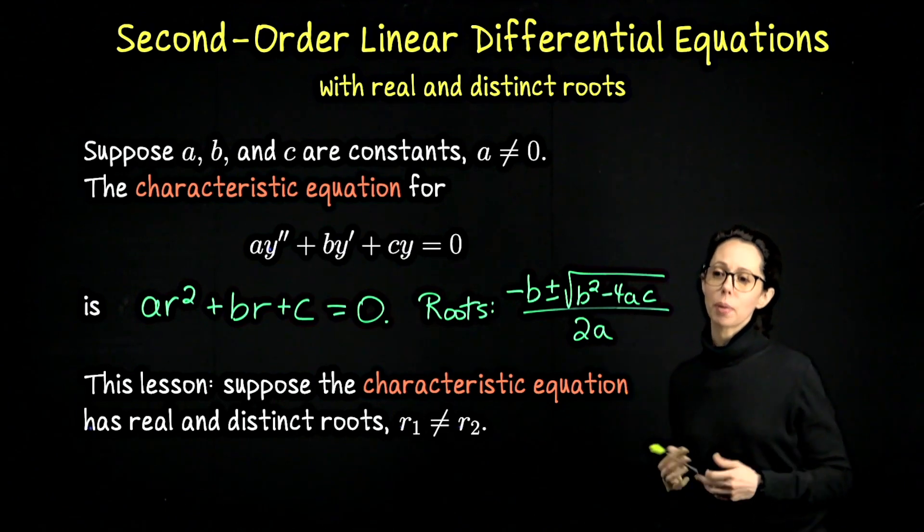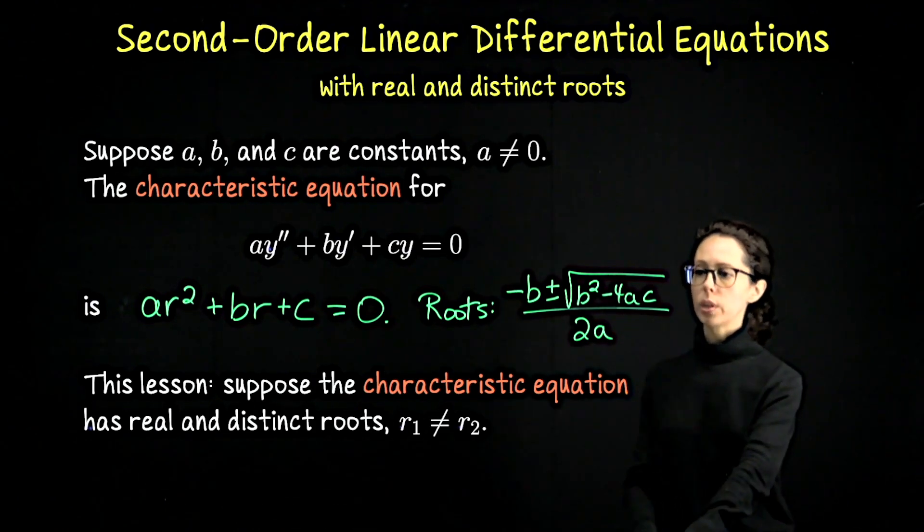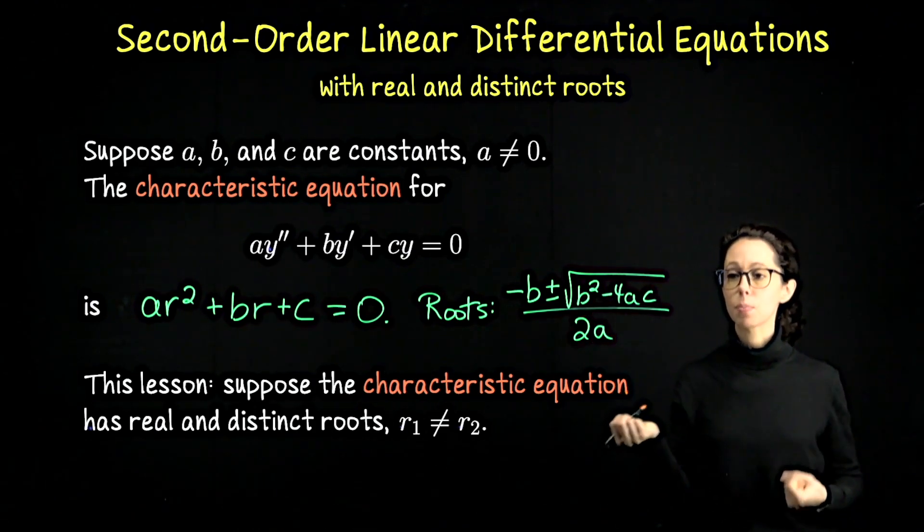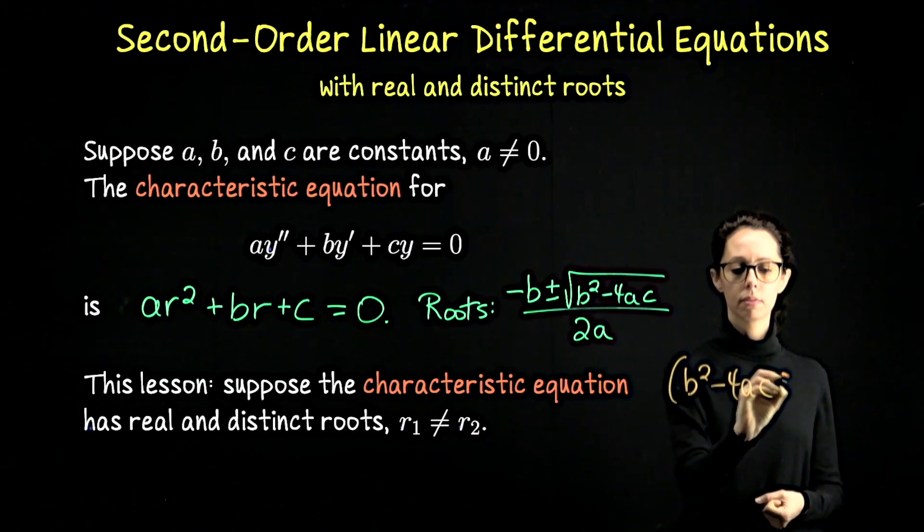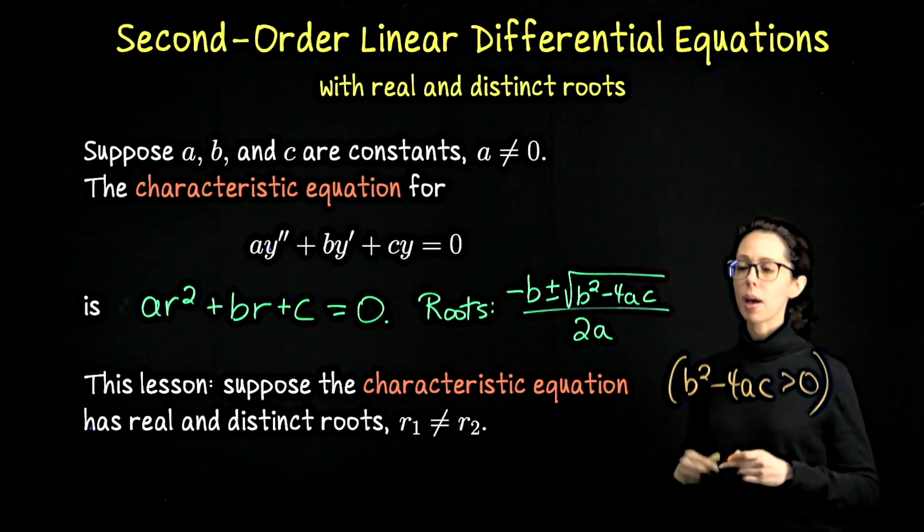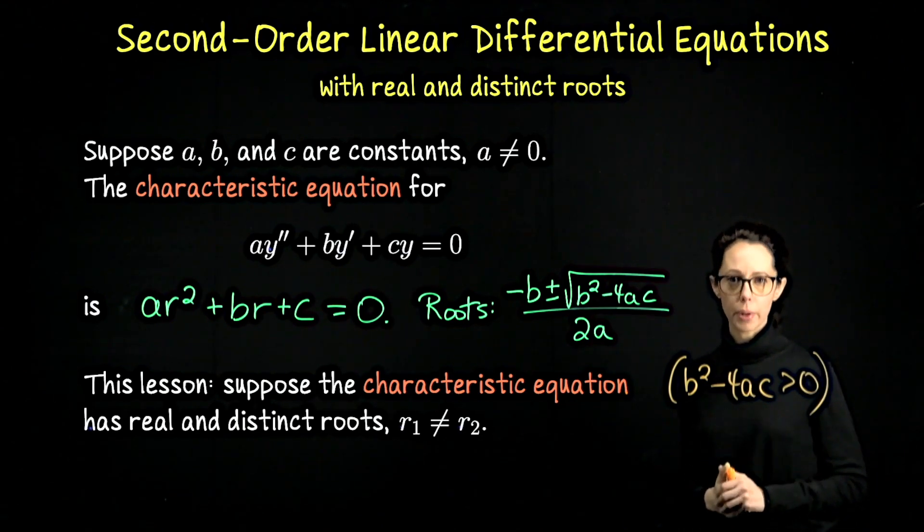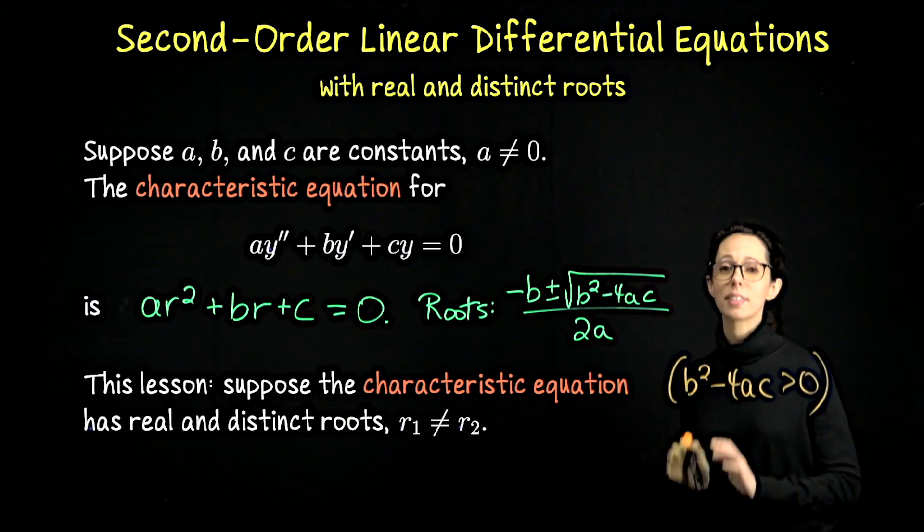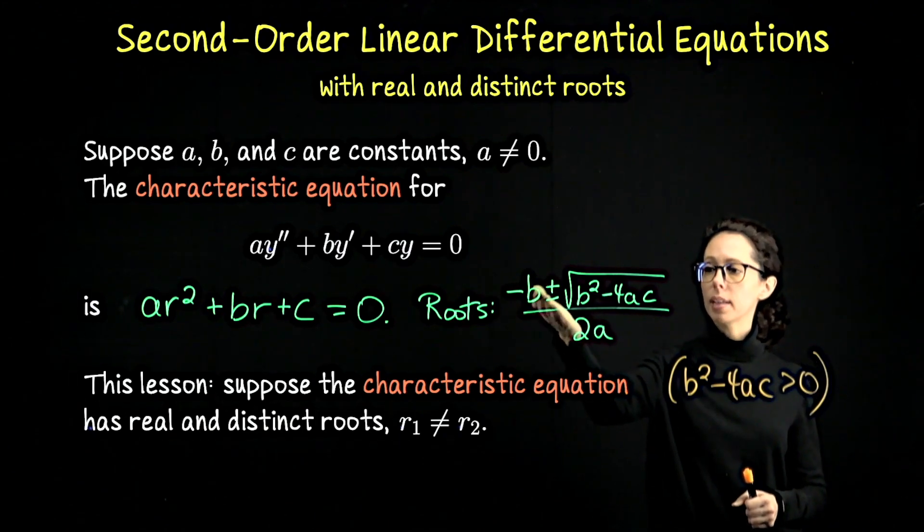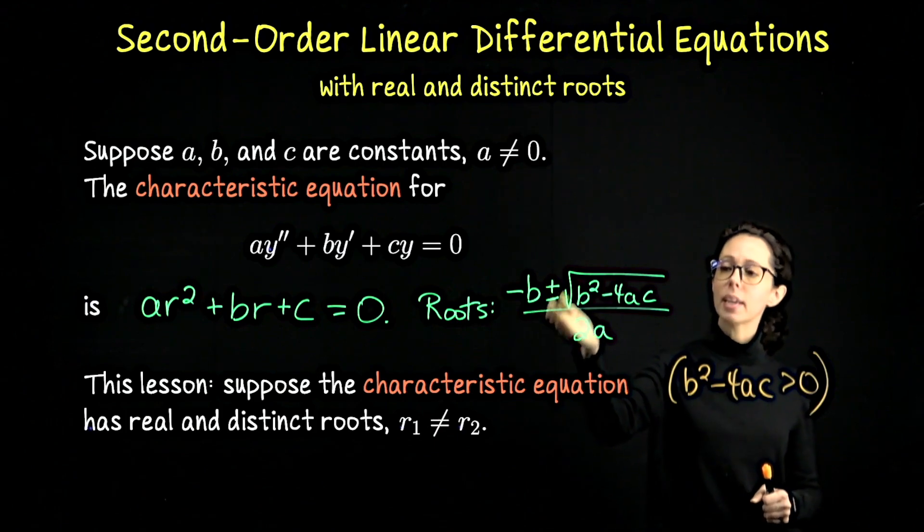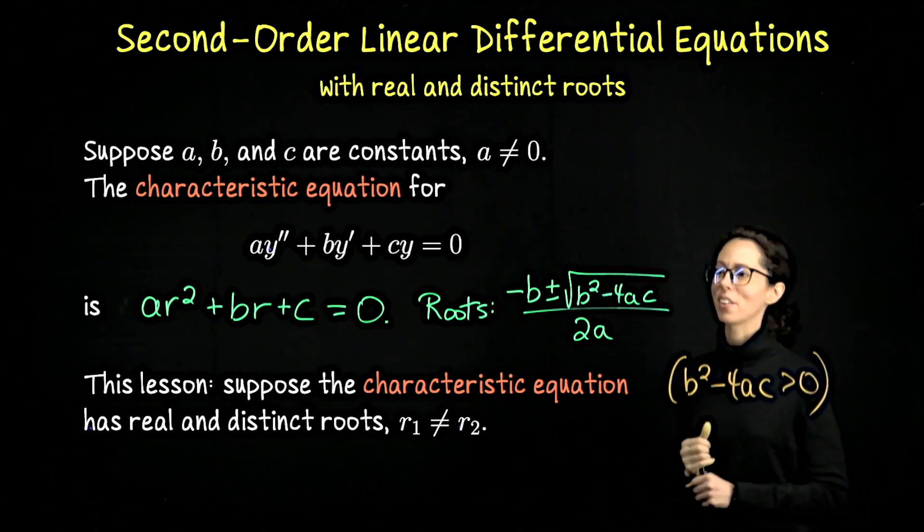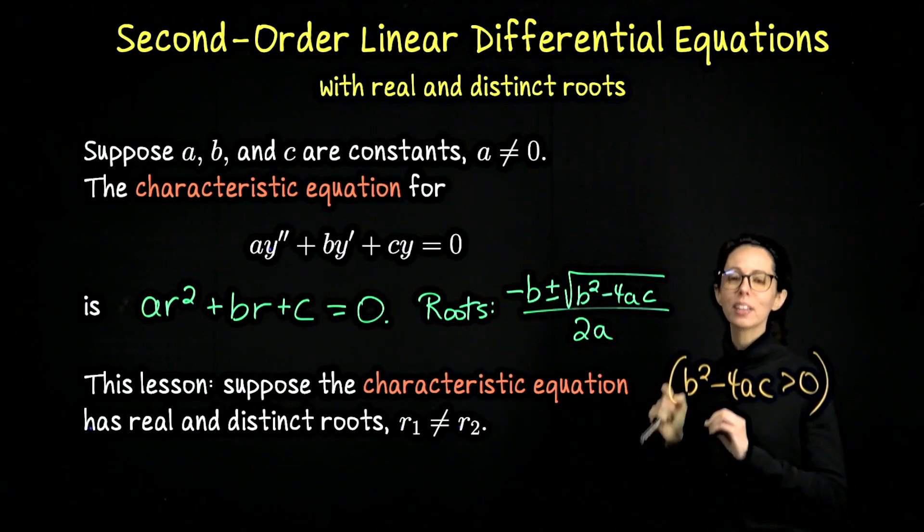In this video, we're going to look at what is probably the nicest version, which is that this discriminant here is positive. When it is positive, that means that the roots are real numbers, no complex numbers, and also they are different. So negative b plus the square root of the discriminant is a different numerator than negative b minus the square root of the discriminant. So we get two real and distinct roots.